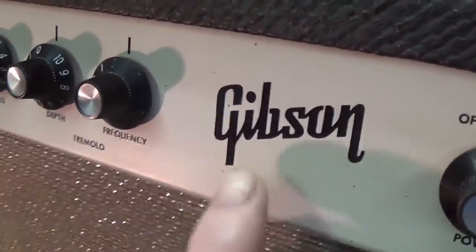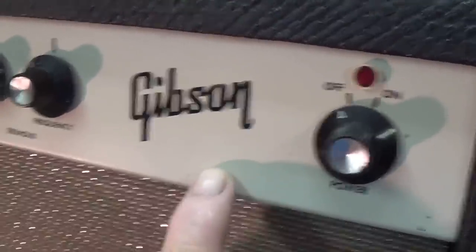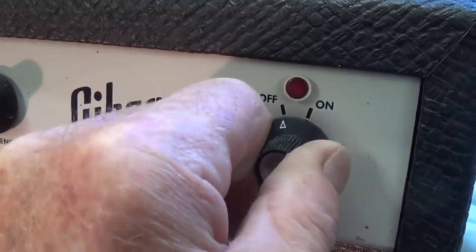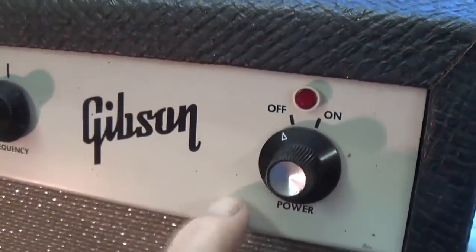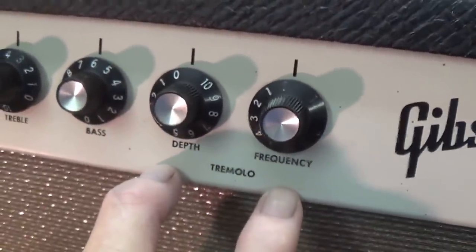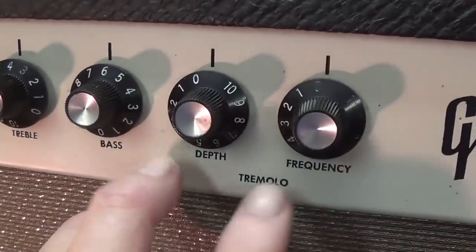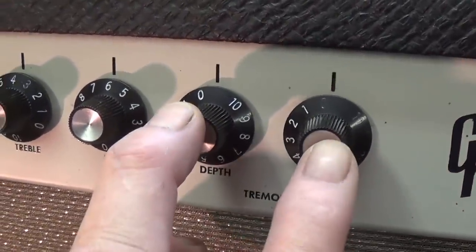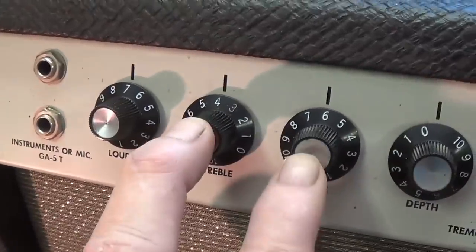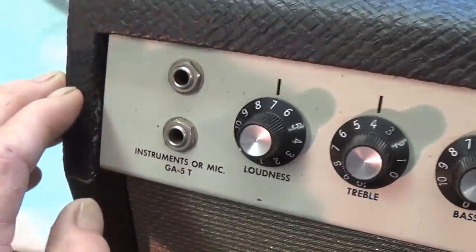First off, the control panel is immaculate. It's a little dull for my taste and could benefit from some car wax. Over here, instead of the toggle switch, they have a rotary switch for on-off with the pilot light. We do have tremolo. That's what the T is in GA5T.